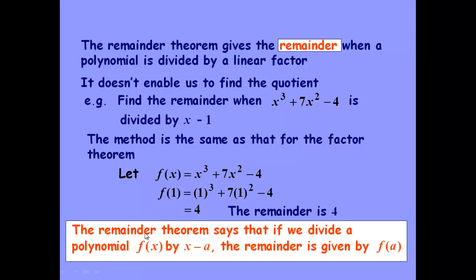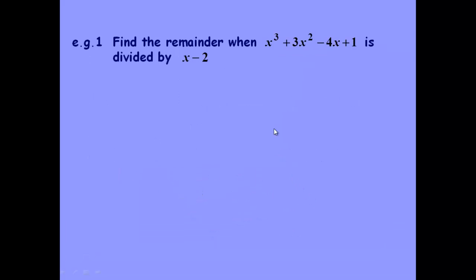So it says that if we divide a polynomial f of x by x minus a, the remainder is given by f of a. And if that remainder is zero, then x minus a is a factor. OK, let's work through an example.